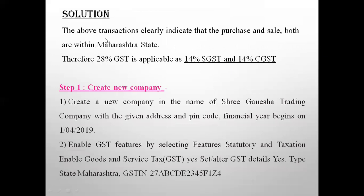The above transactions clearly indicate that the purchase and sale both are within Maharashtra state — one is in Kollapur, second is in Satara, both are in Maharashtra. Therefore 28% GST is applicable as 14% SGST and 14% CGST — state and central. Now we are starting with the problem. Last session I had shown you how to work with Tally 9 software, so that way we are starting with the creation of a company.